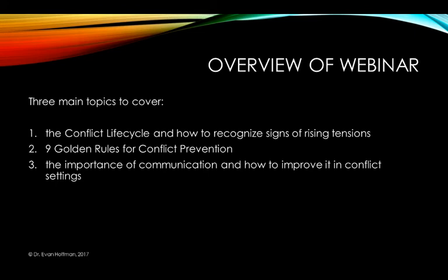The second topic covers nine golden rules for conflict prevention. We have to be aware that conflicts go through certain predictable phases where they escalate, and we need to know what we can do in practical terms to help prevent conflicts from getting more serious or becoming violent.